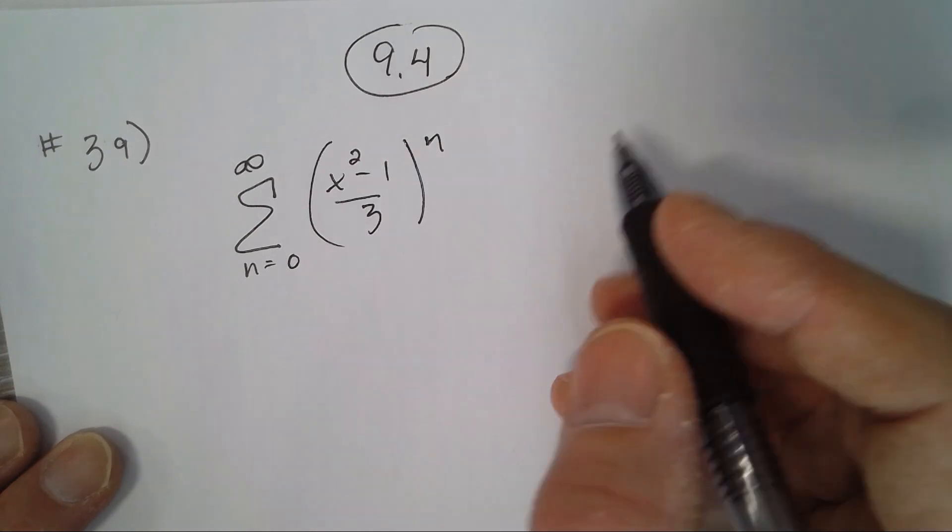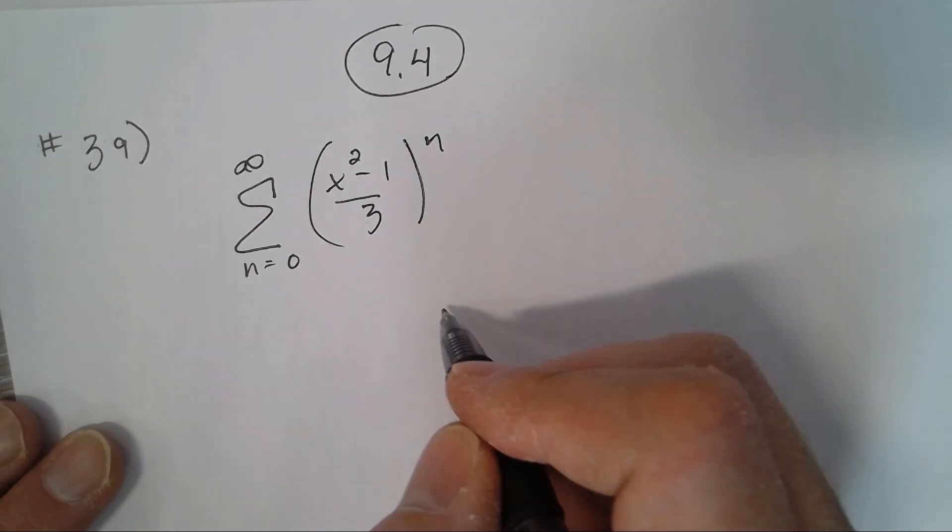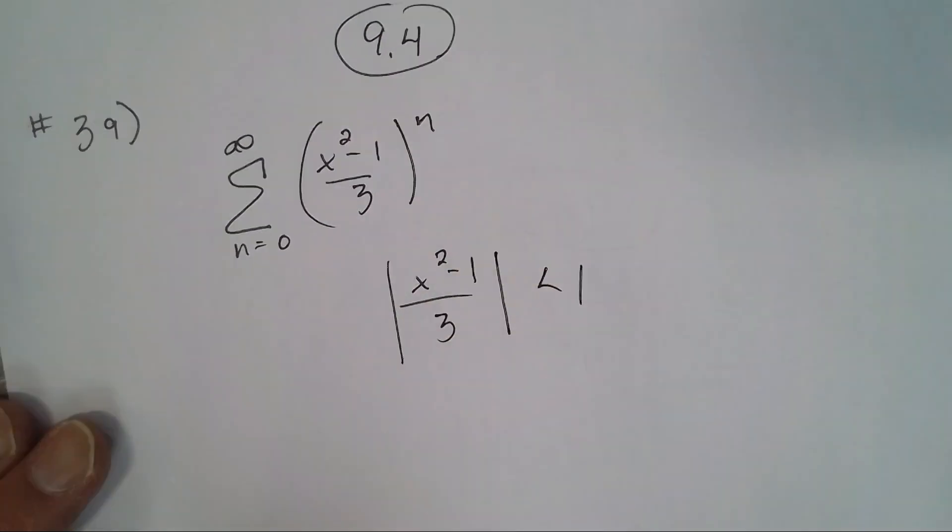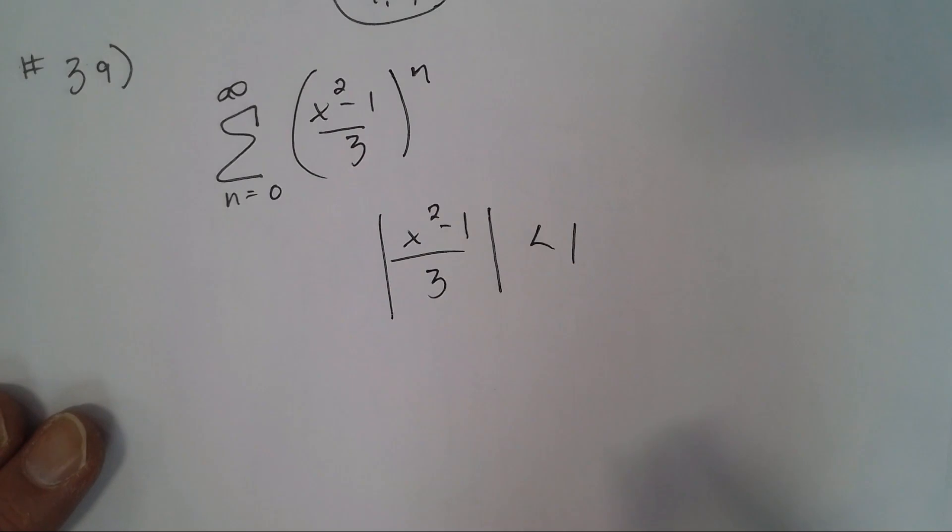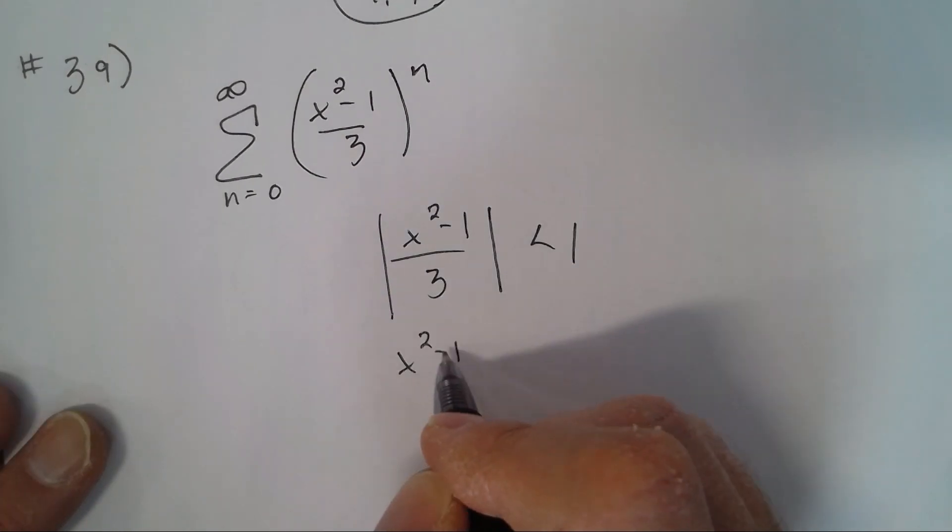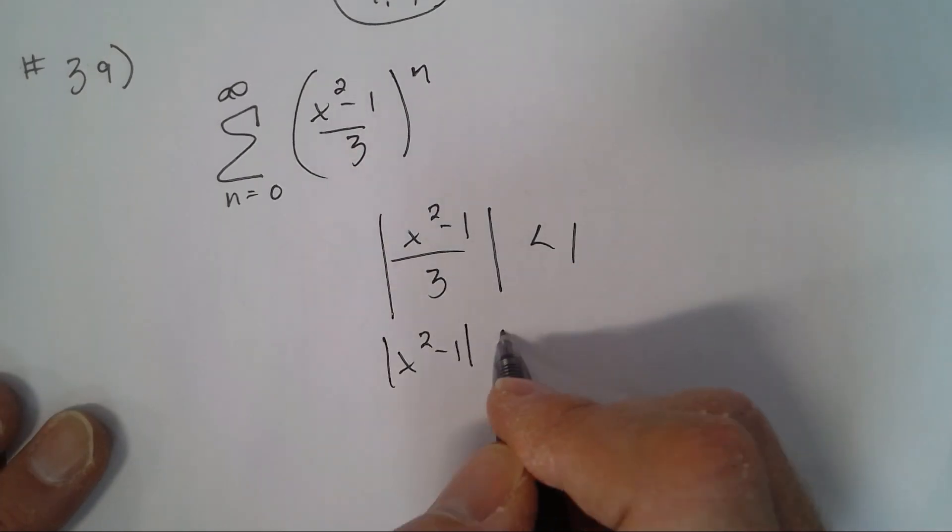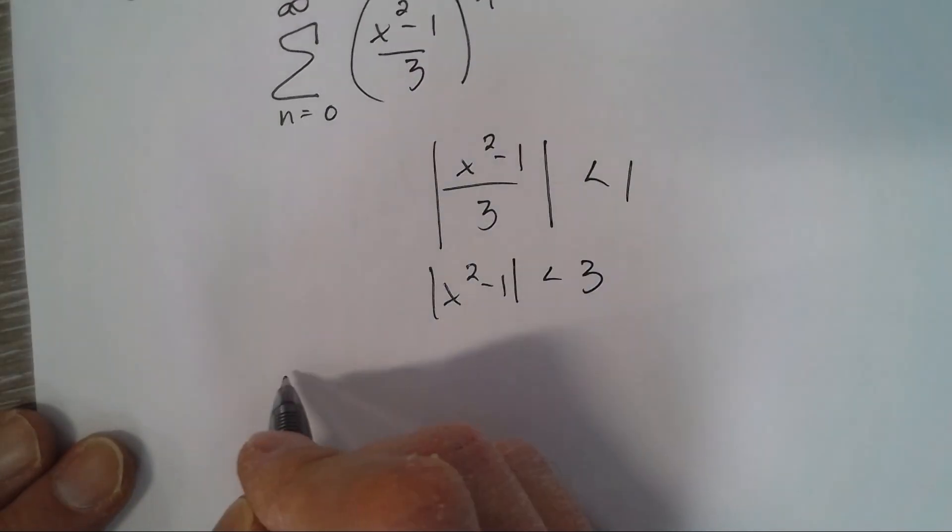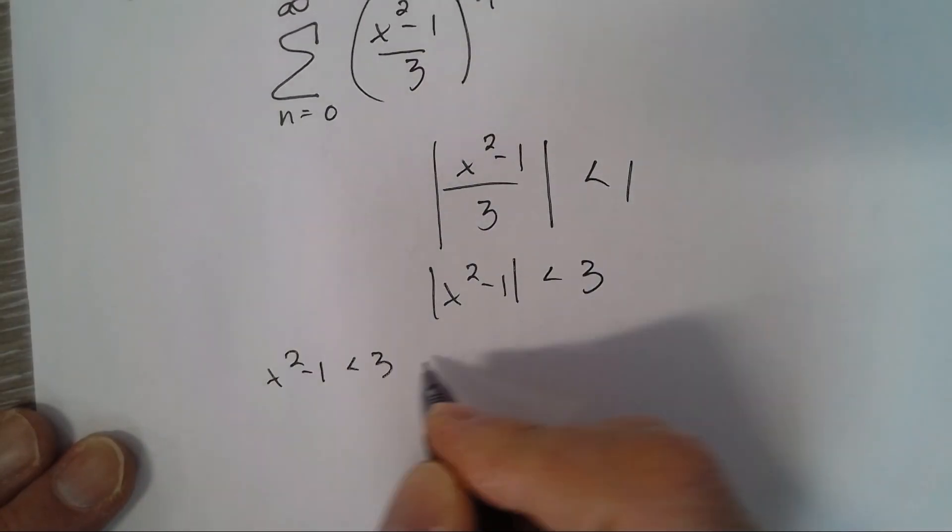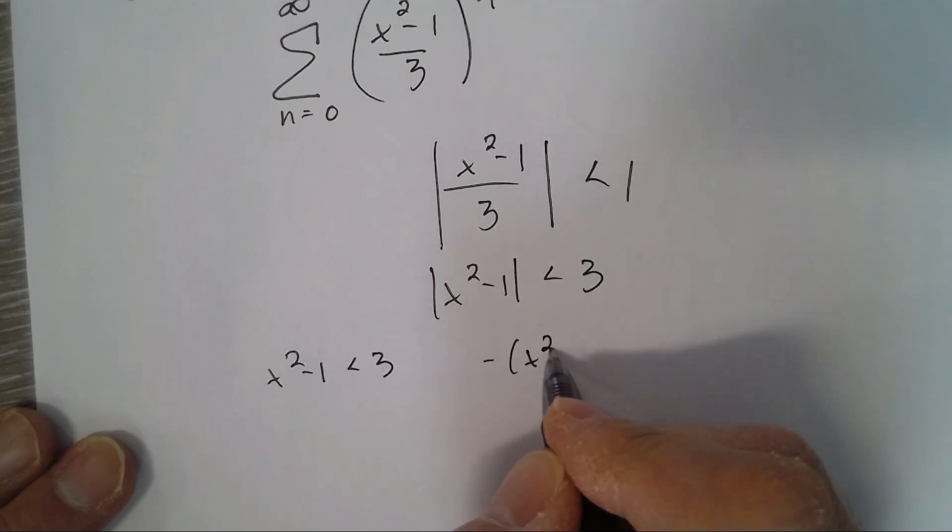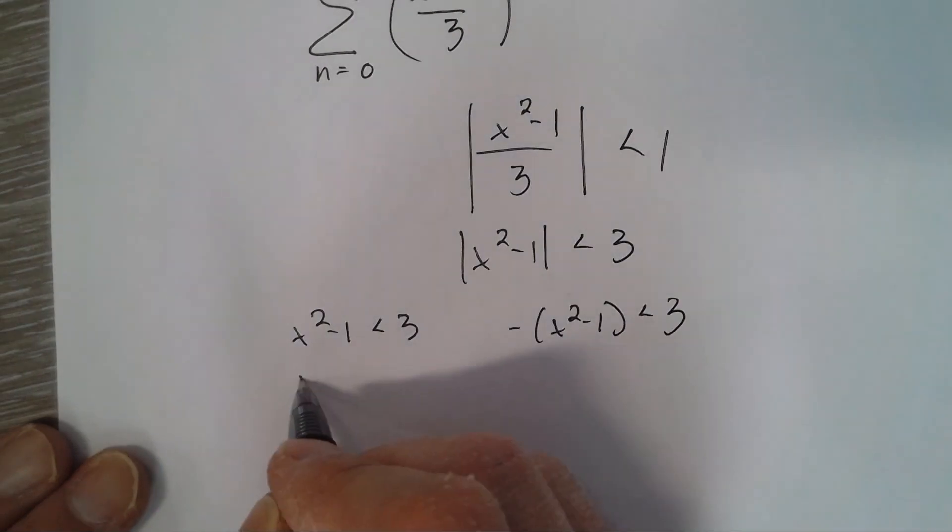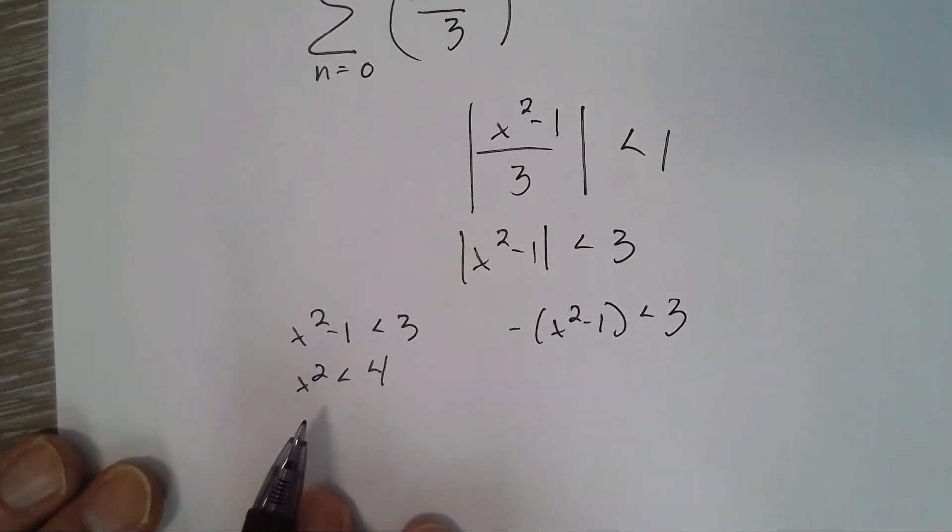So multiply by three. We have x squared minus one can be less than three, and the opposite of x squared minus one less than three. All right, so I get x squared less than four. So where is x squared less than four?